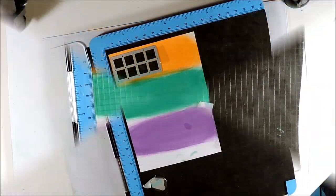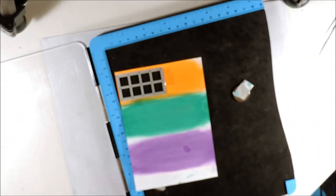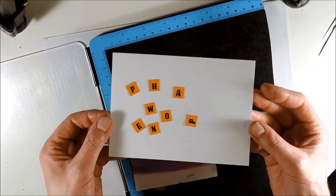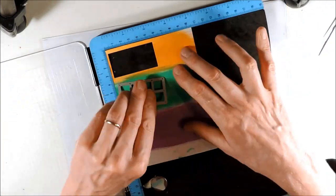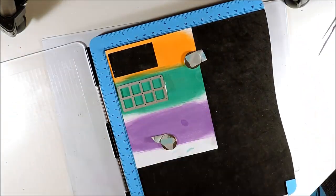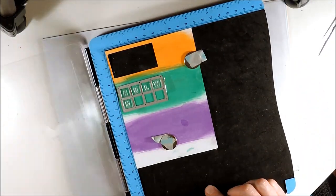After I have run everything through the die cutting machine, the result looks like this. Then I am repeating the process with the rest of my letters and the other two colors.